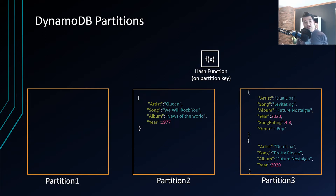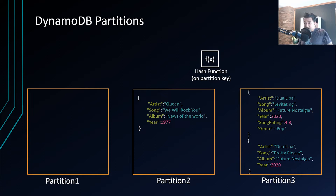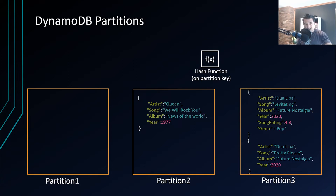The number of partitions can change as consumed storage increases (since the limit per partition is 10 GB) or when you increase or decrease provisioned capacity. In an ideal scenario all partitions should be equally busy, but in the real world one partition could be much busier than others — that's called a hot partition — while the others are cold partitions.